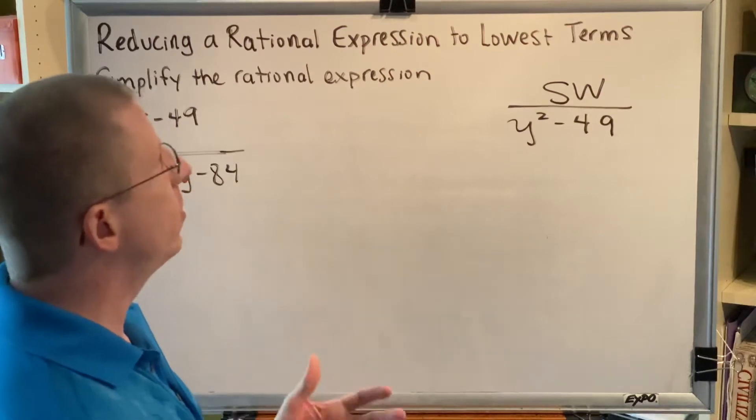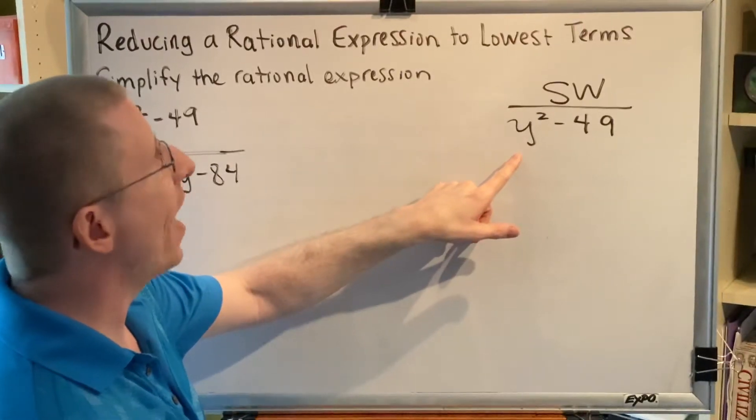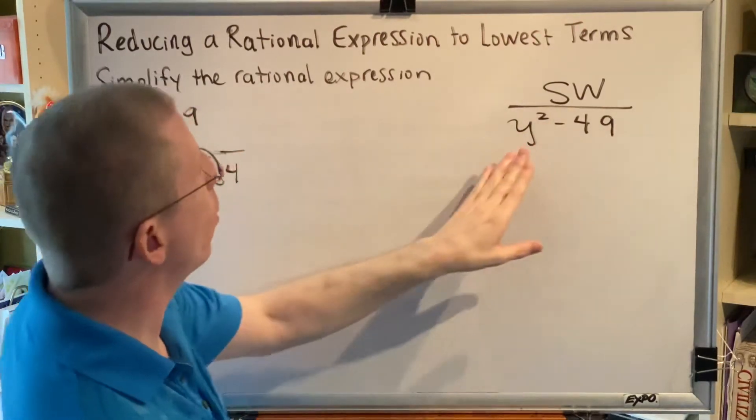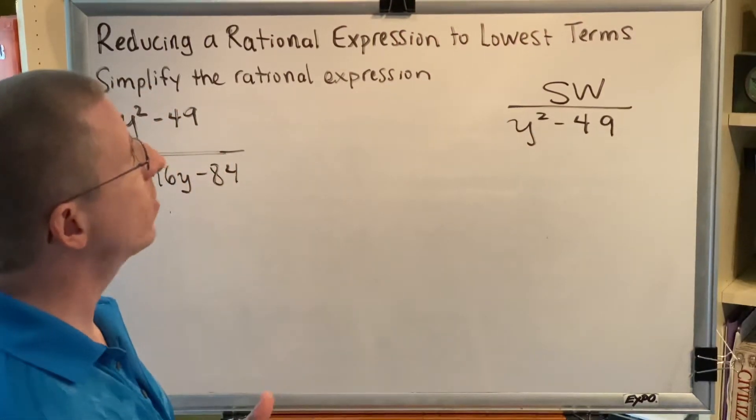First, descending order. This is already in descending order. We look at the exponent on the variable, so we've got a 2, and then since there's no y here, that's a 0. 2, 0 is descending, so we're in descending order.